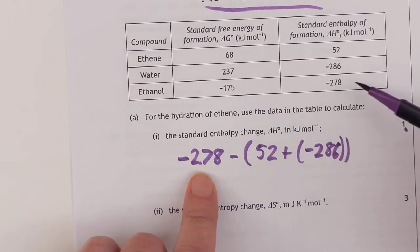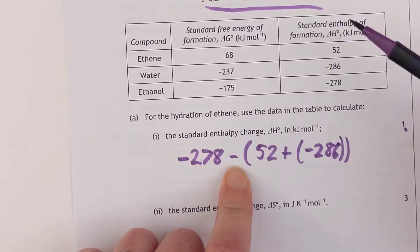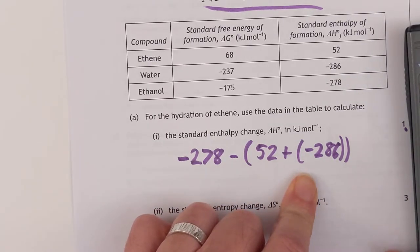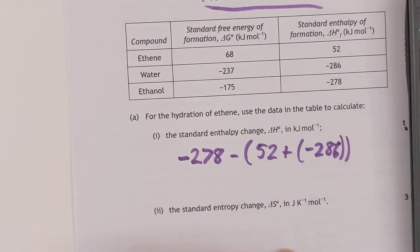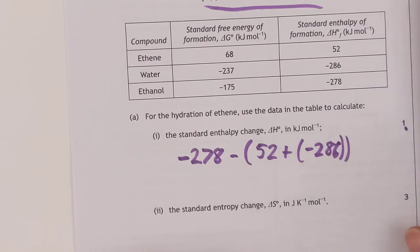So we've got our ethanol enthalpy of formation, take away the sum of ethene and water — which is 52 and negative 286. We've got negative 278, take away 52 and negative 286, which gives you negative 44.